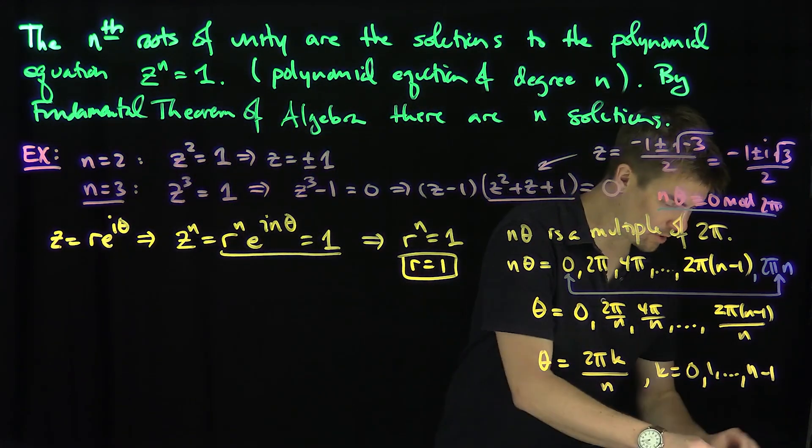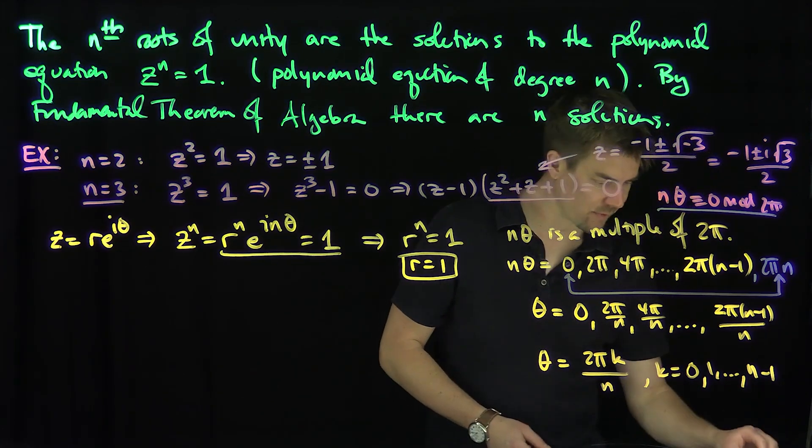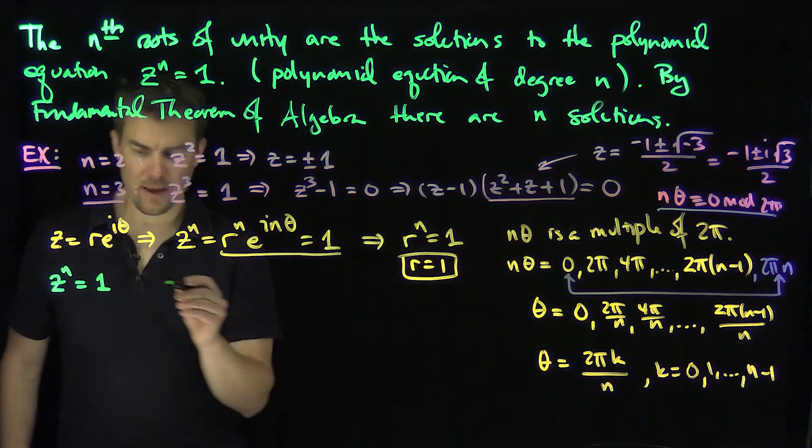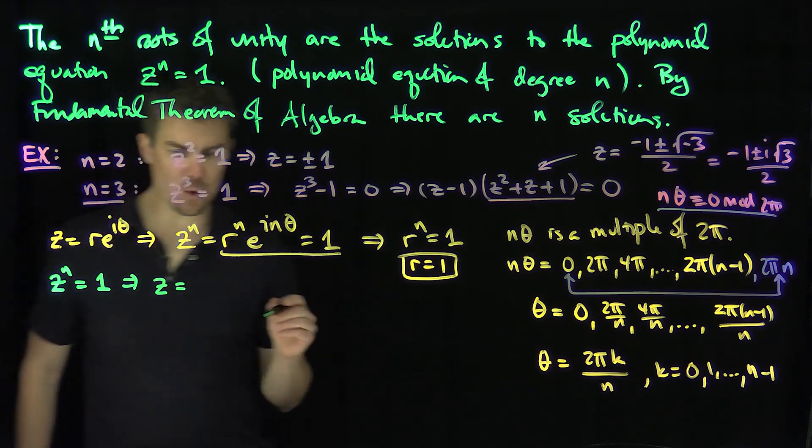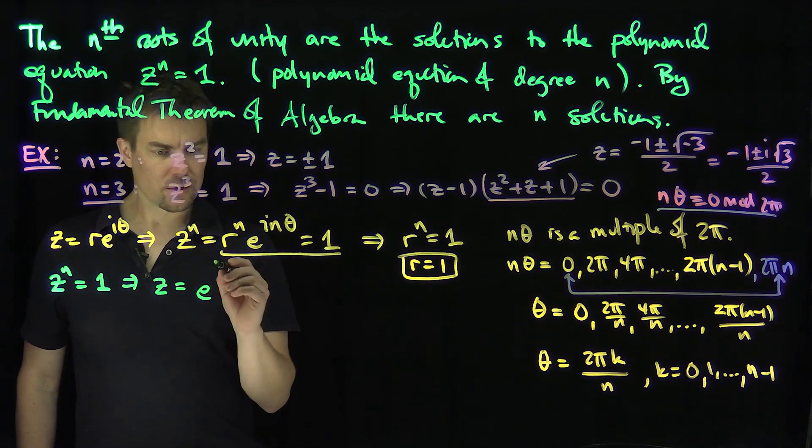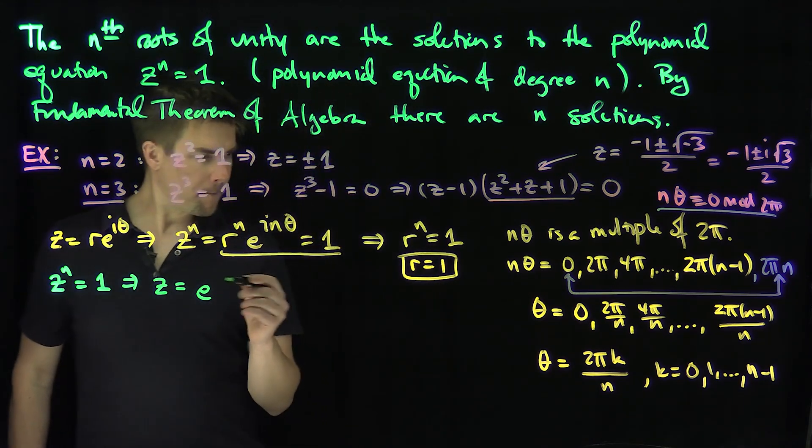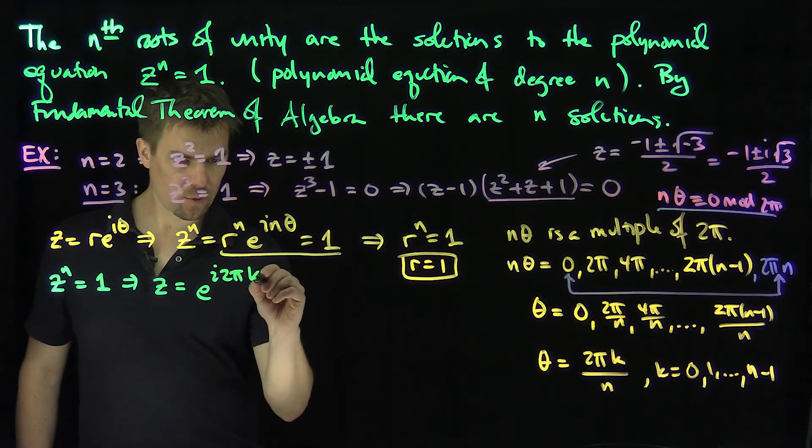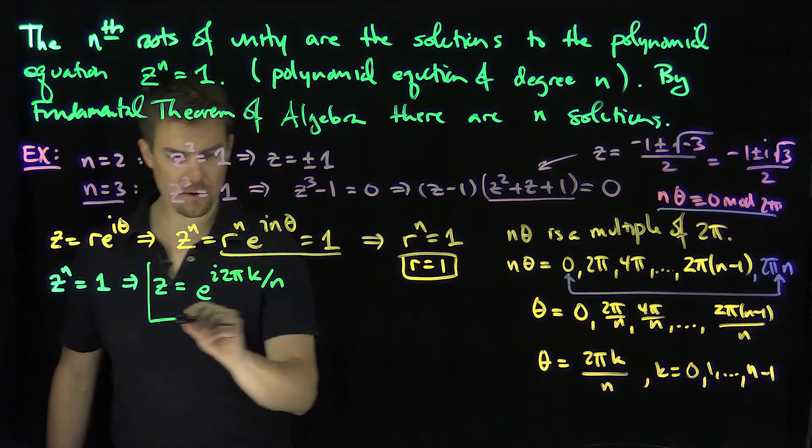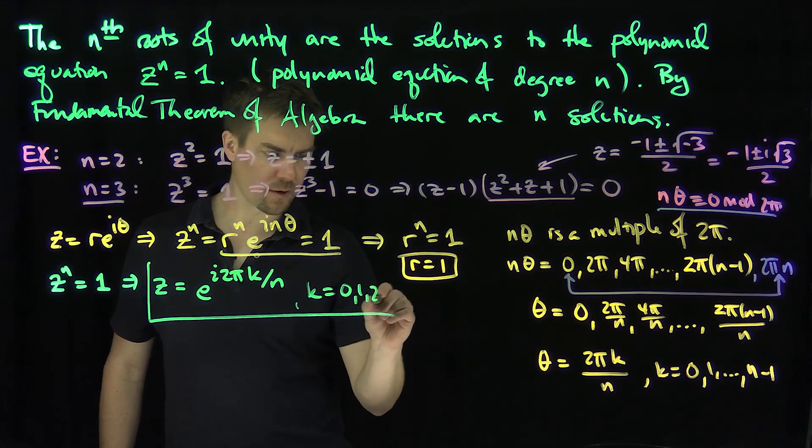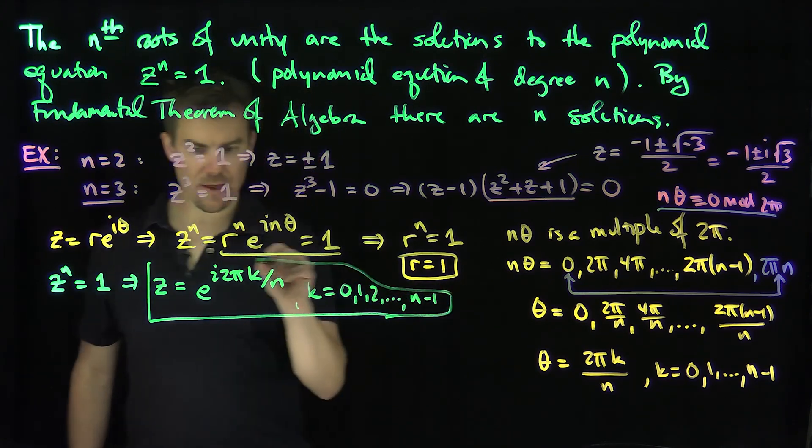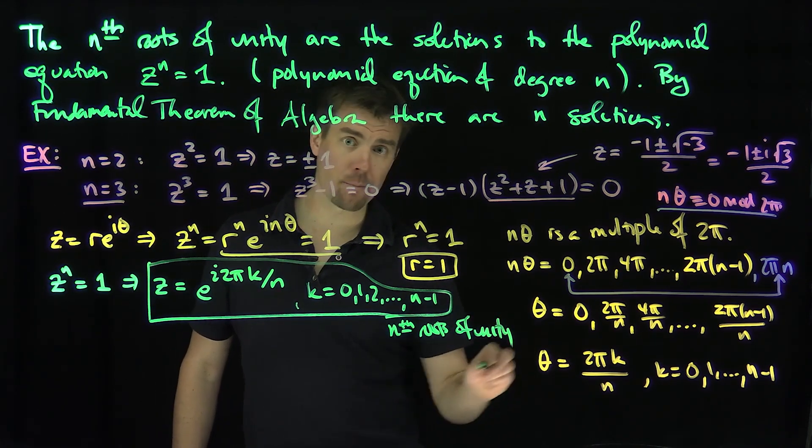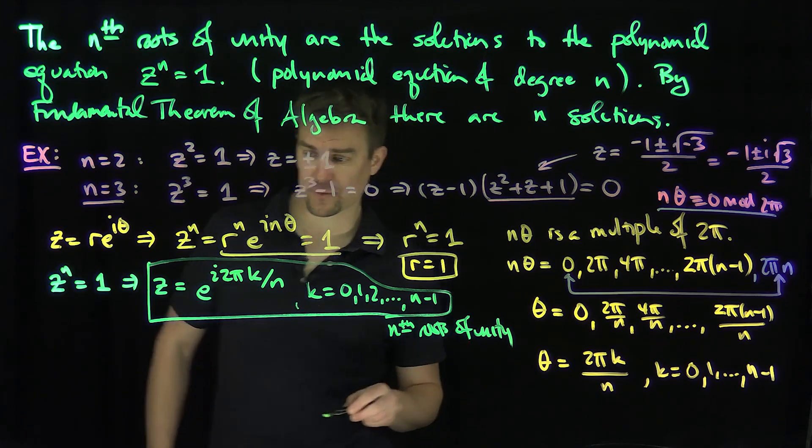So now we have found our nth roots of unity using Euler's formula. What are our nth roots of unity? z to the n equals 1 implies that z is equal to e to the i times 2 pi k divided by n, for k equals 0, 1, 2, all the way up to n minus 1. And these numbers are called the nth roots of unity.